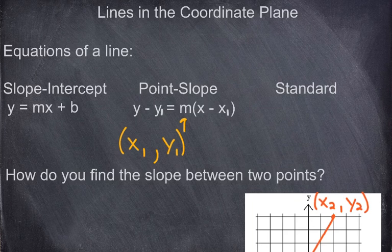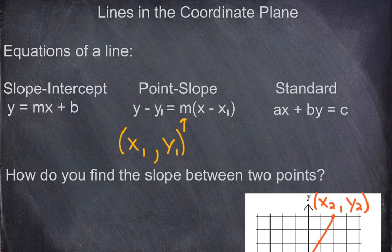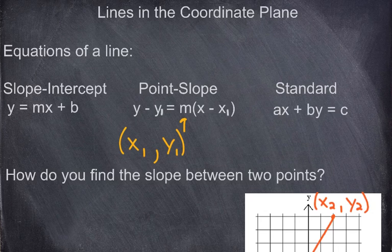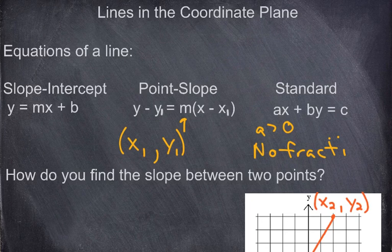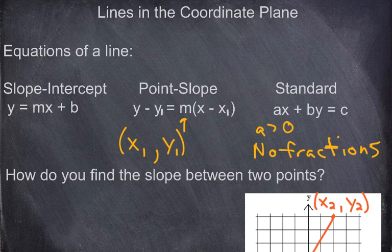The third and last one is standard form. Standard form is ax plus by equals c. This is when x and y are both on the same side of the equal sign, and the number without x or y is on the opposite side. Two quick things: a has to be positive — greater than zero — and there should be no fractions in the final answer.